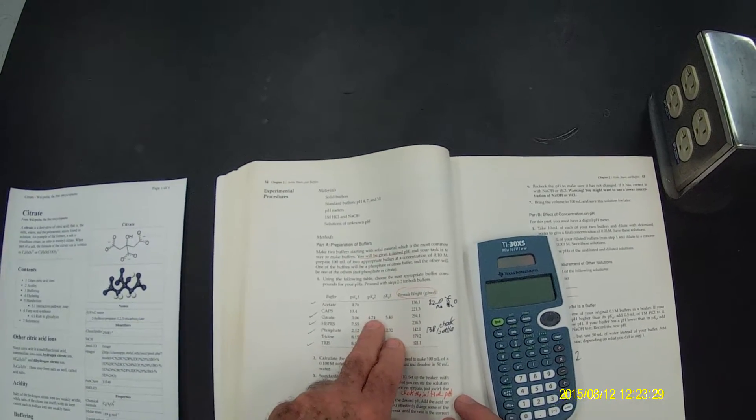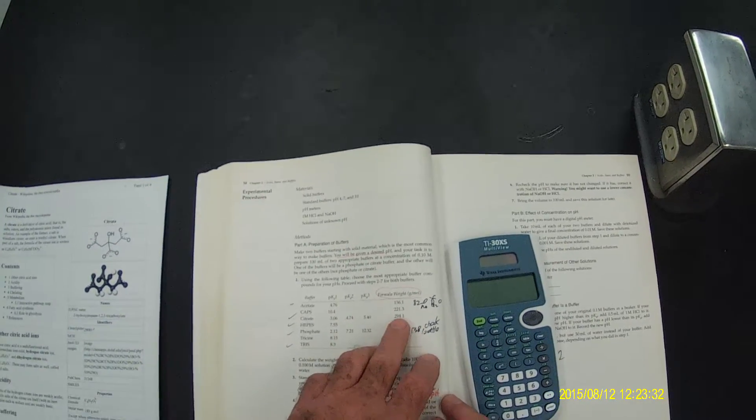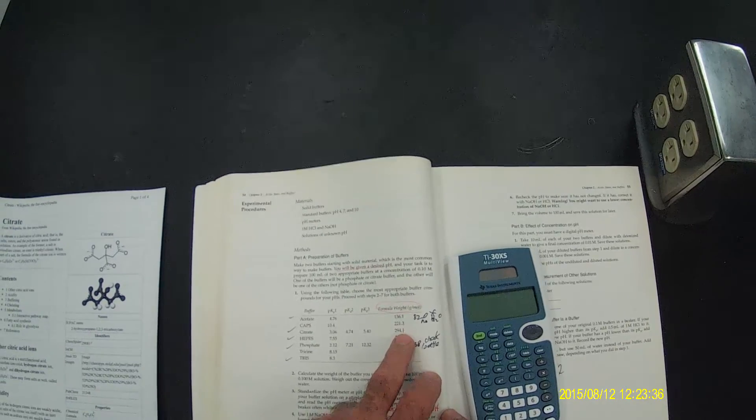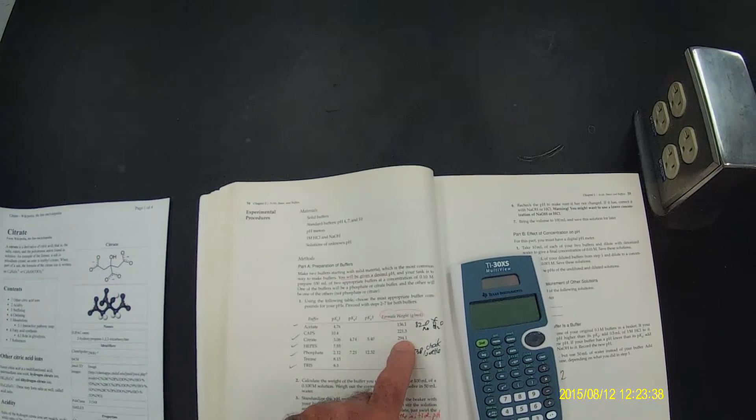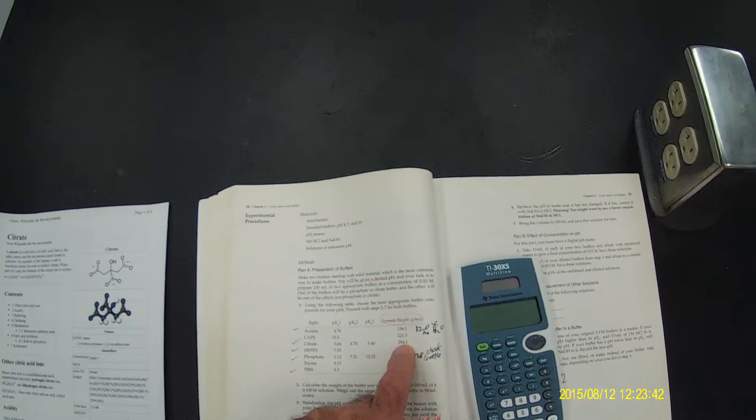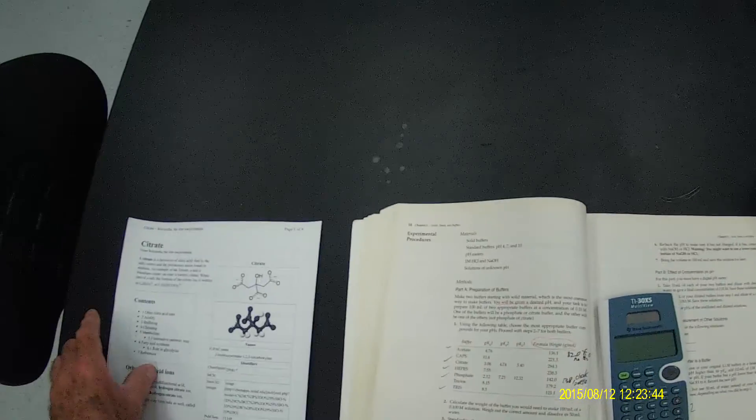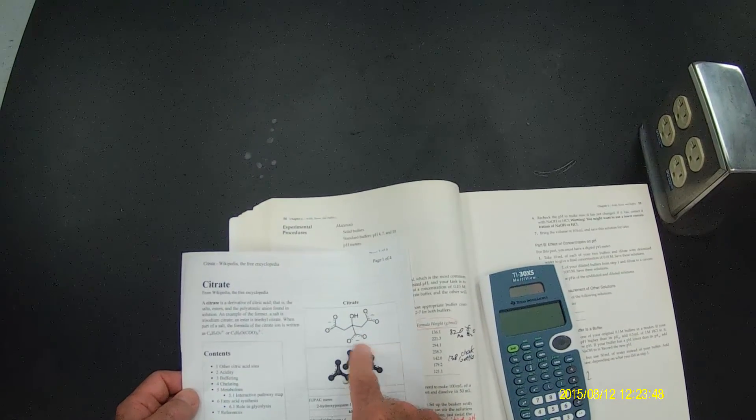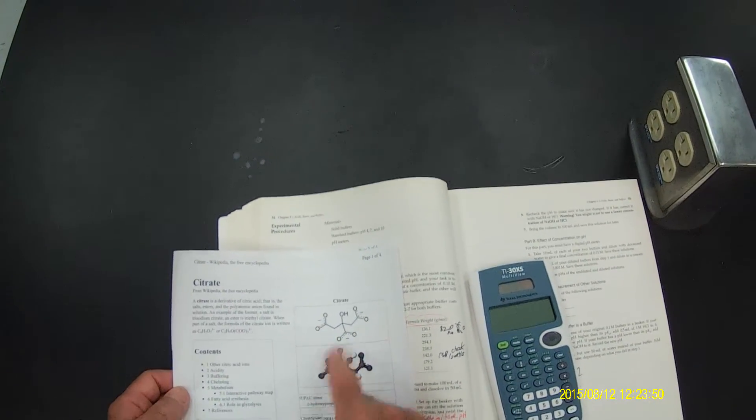Let's choose the 4.74 as an example, and we see the molecular weight is given here as 294.1 grams per mole. This is for the trisodium hydrate material, which we have here in the lab. So citrate, as we'll learn, is a tricarboxylic acid, so that's why it has three pKa's.